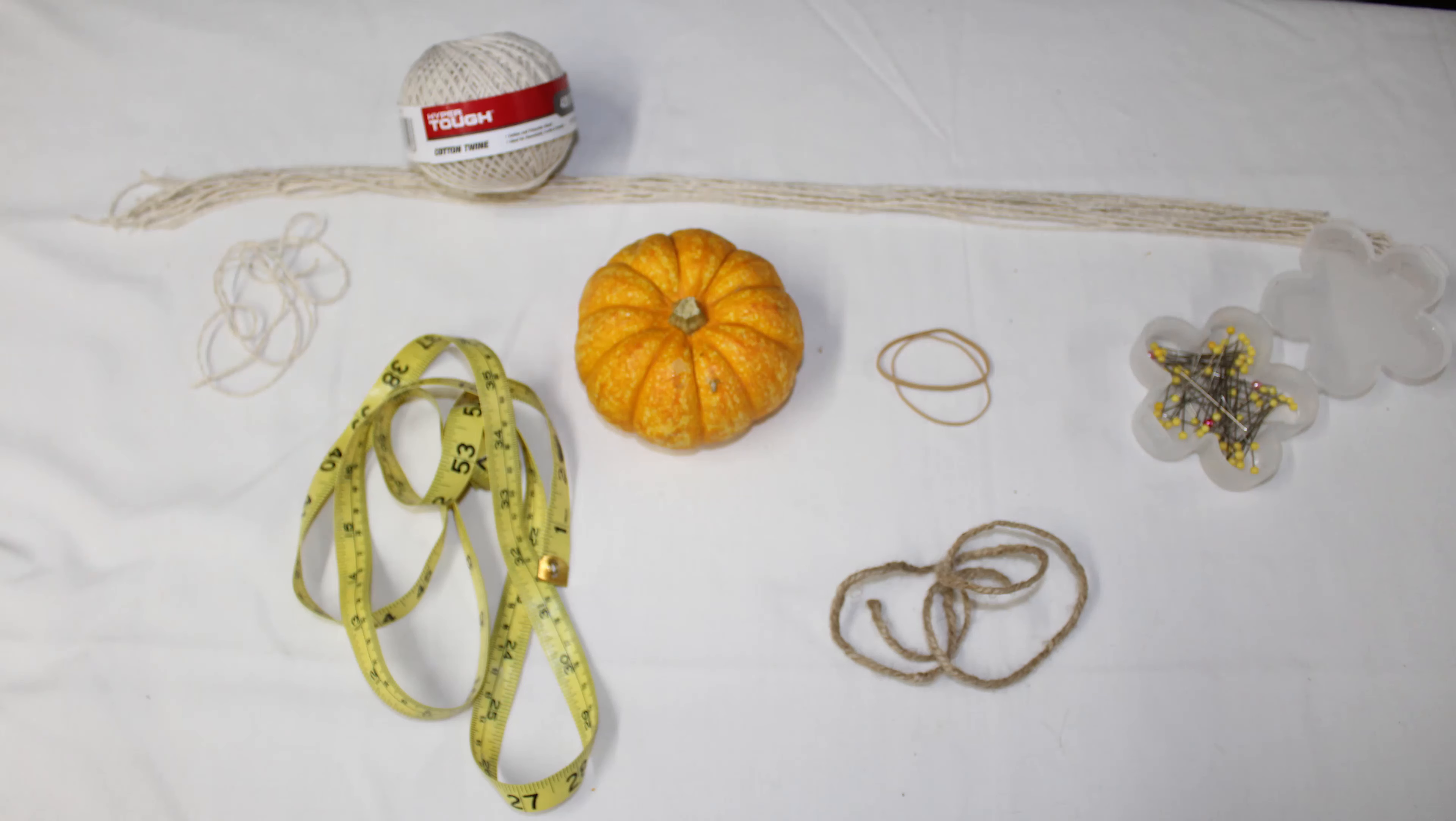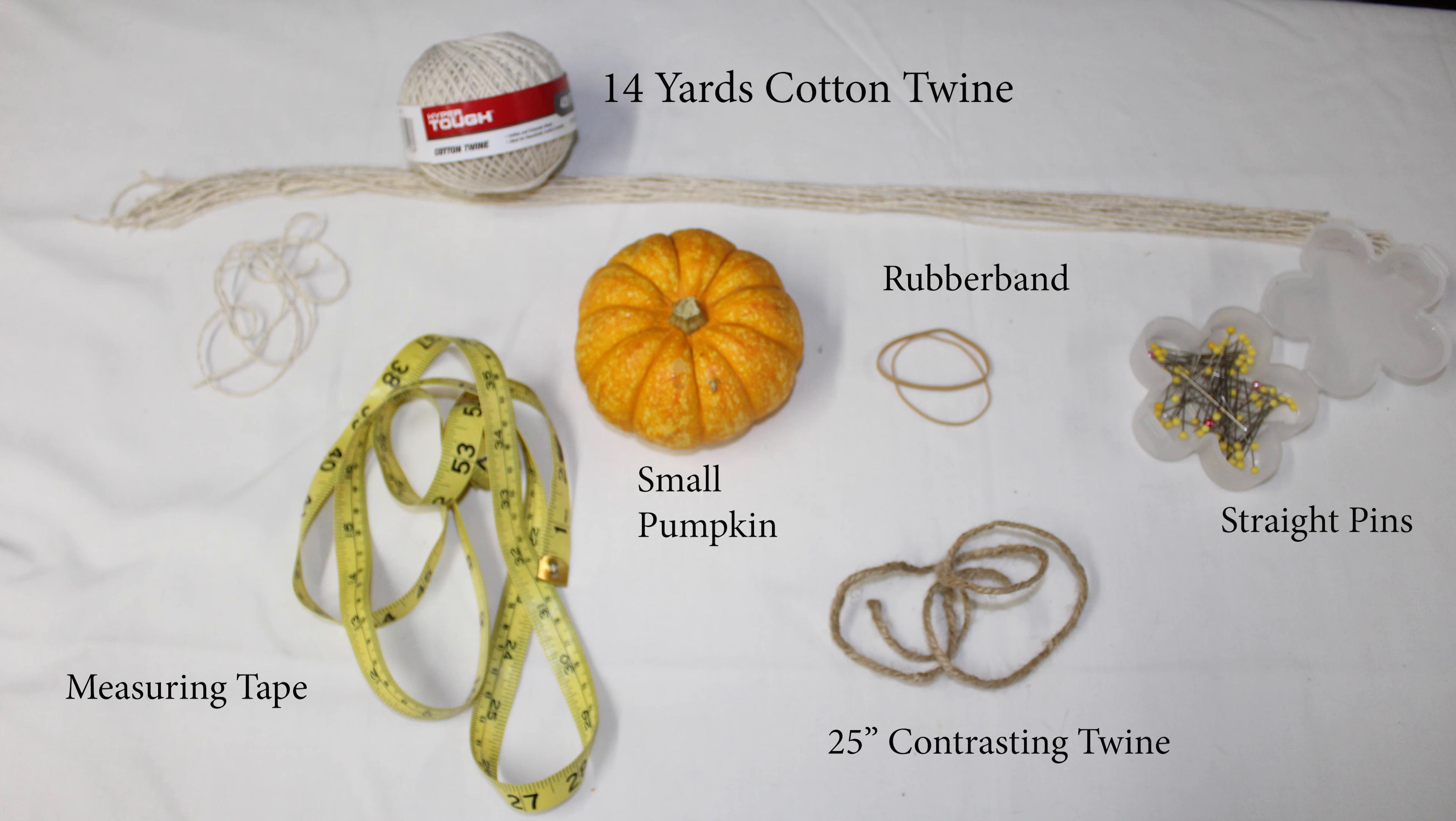To make this cute little pumpkin, here's a visual of the supplies you'll need. You'll need some cotton twine, roughly about 14 yards of it. You'll need an alternative twine to wrap on the stem if you choose to do a contrast. You can use the same twine. I've done both, so if you want to do jute or something different, you'll need just about 25 inches of that.